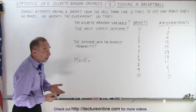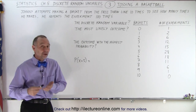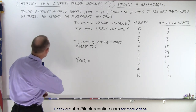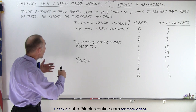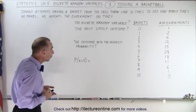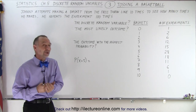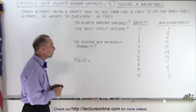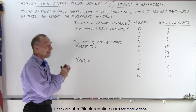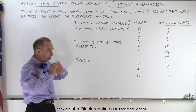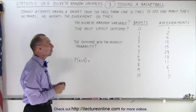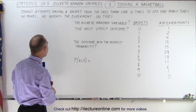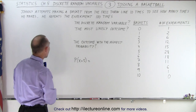So we're tossing a basketball — not us, but Johnny. Johnny is tossing a basketball and he's attempting to make a basket from the free throw line. He's going to throw the ball 10 times to see how many times out of those 10 he actually makes the basket.